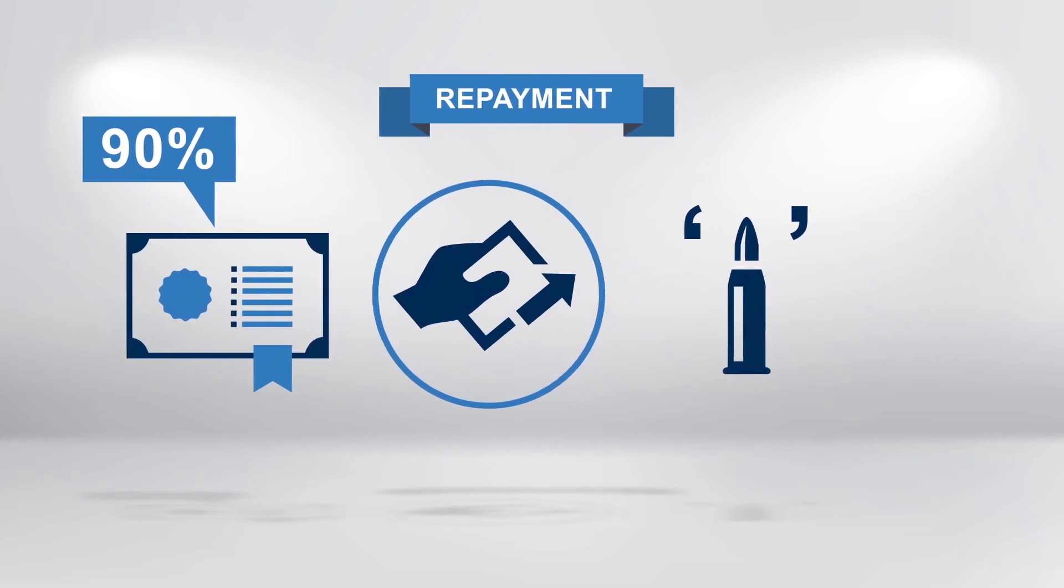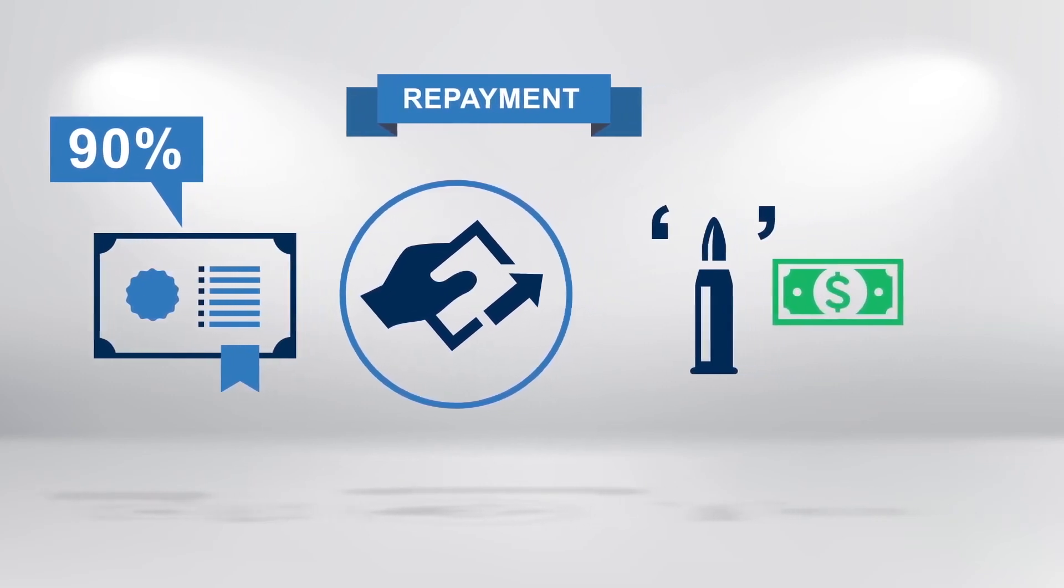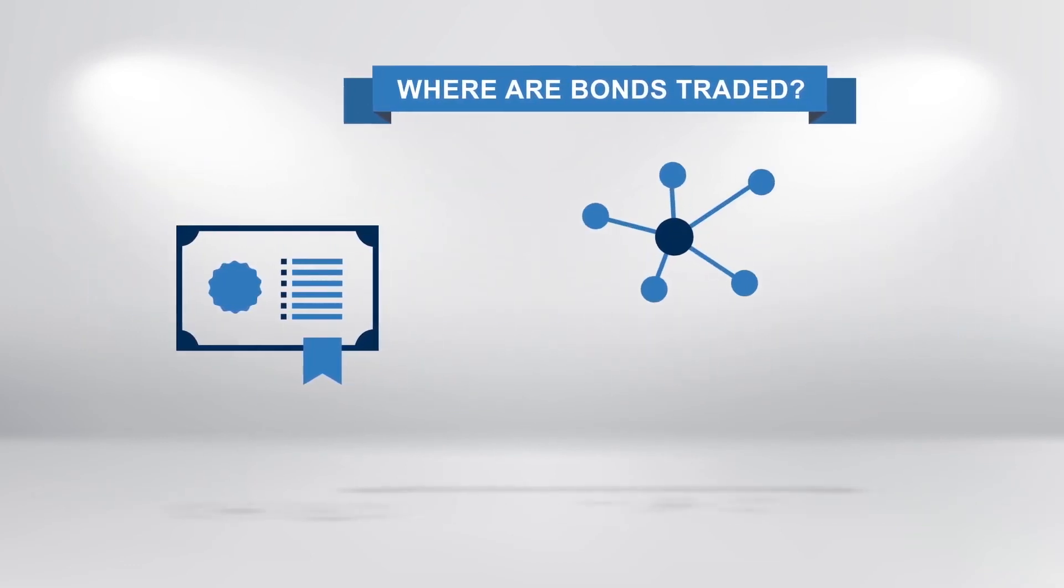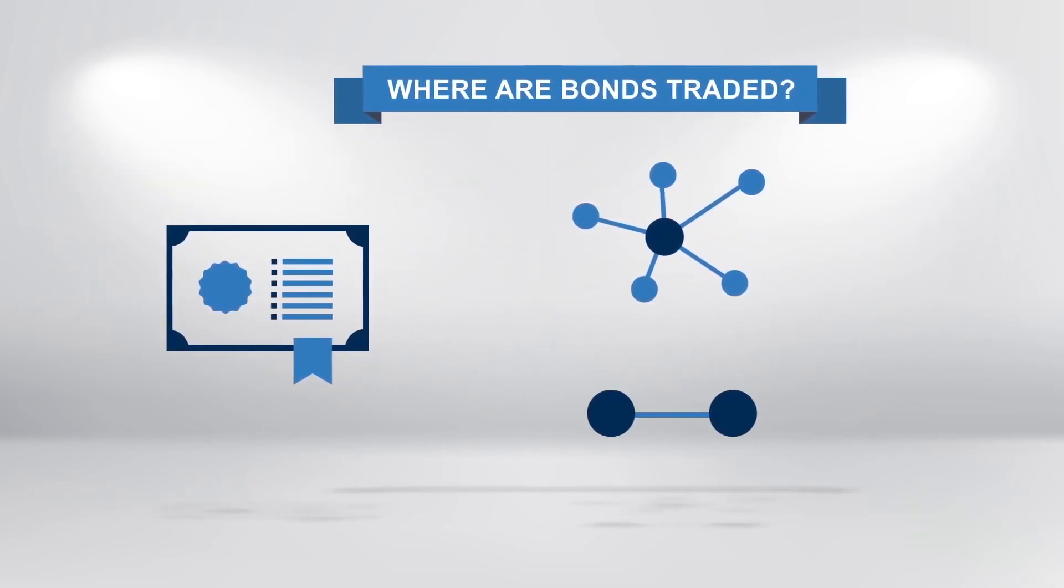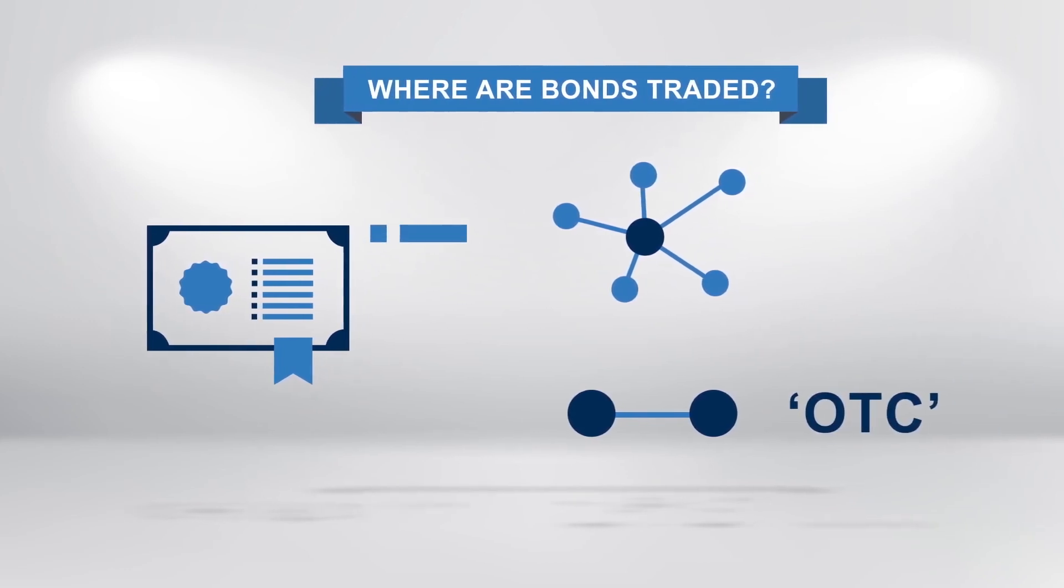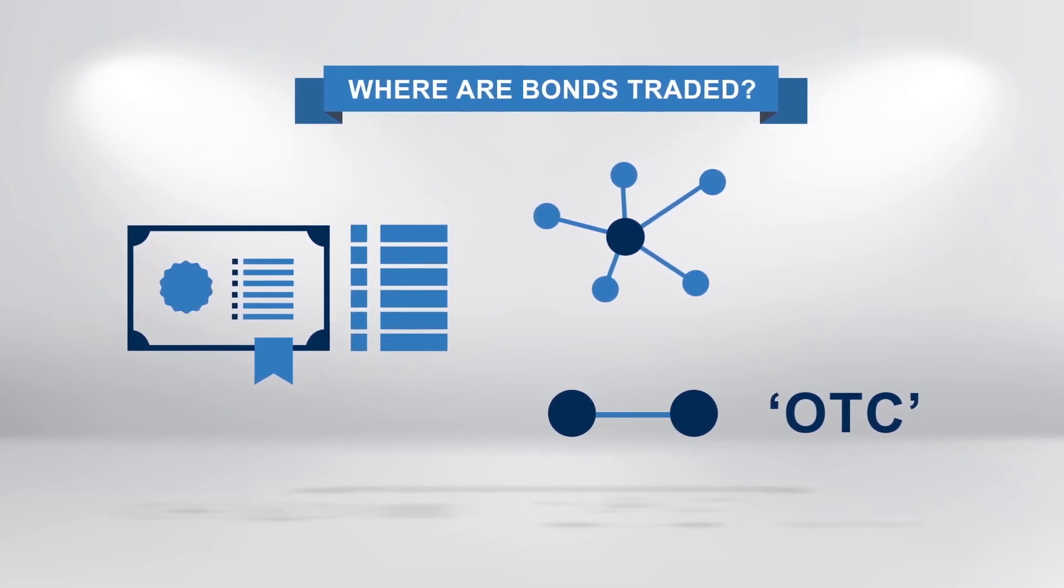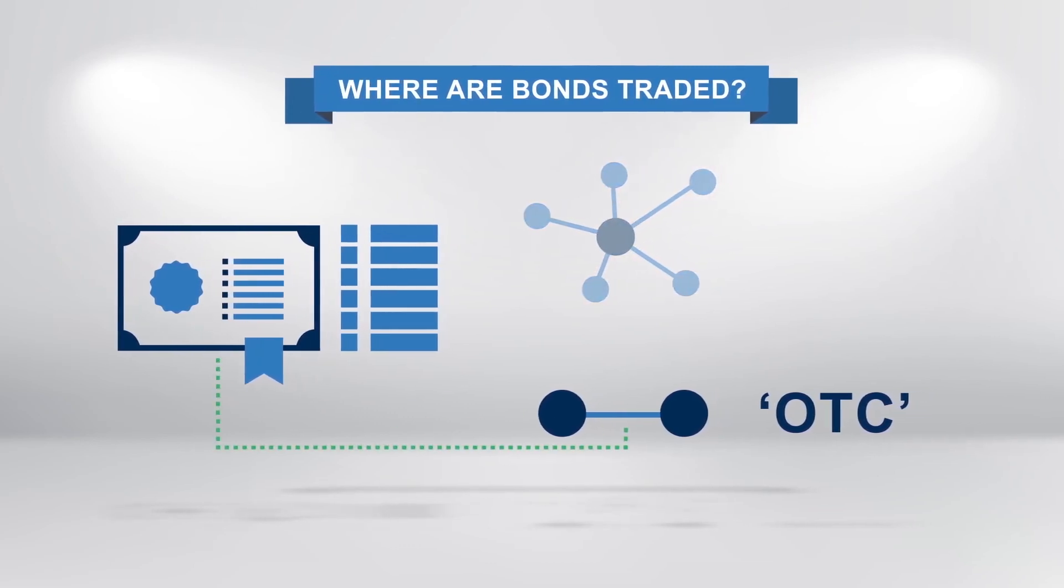Bonds are either traded via an exchange or over the counter, which is also known as OTC. Bonds are usually listed on an exchange, but unlike equities, their liquidity is poor, so the trading is done OTC.